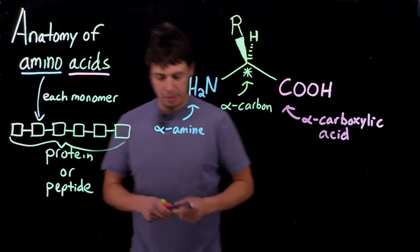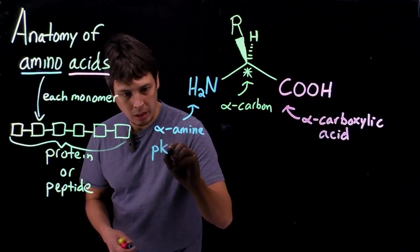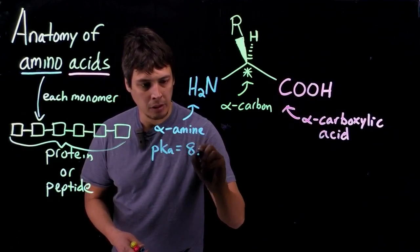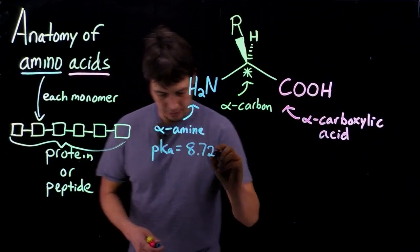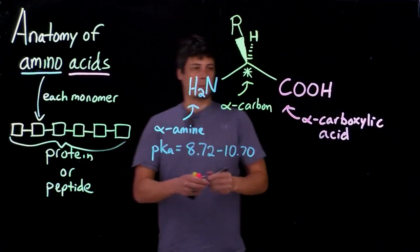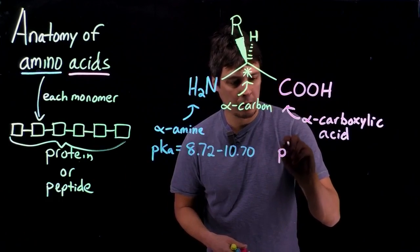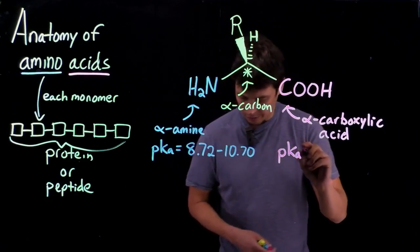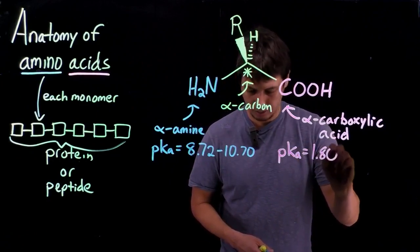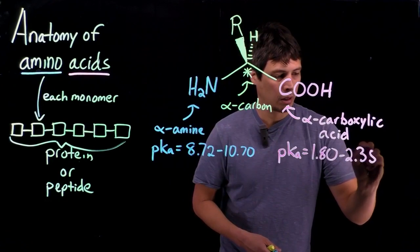Now, we want to look at the pKa's of this. So, the pKa of the alpha amine, for the 20 canonical amino acids, ranges from 8.72 to 10.7. Whereas, the pKa for the carboxylic acid group, again, for the 20 canonical amino acids, ranges from 1.8 to 2.35.